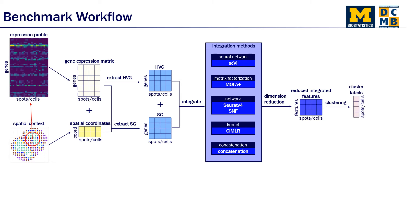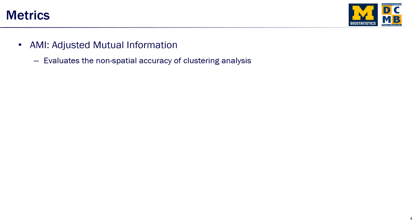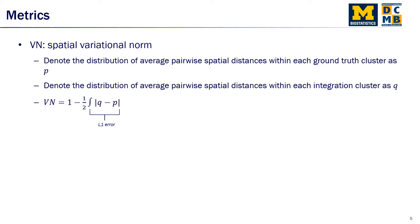And we evaluated the clustering performance based on the following: AMI, which stands for adjusted mutual information. This is the metric that we use to evaluate the non-spatial accuracy of the clustering analysis. And for the spatial clustering metric, we used a spatial variational norm.